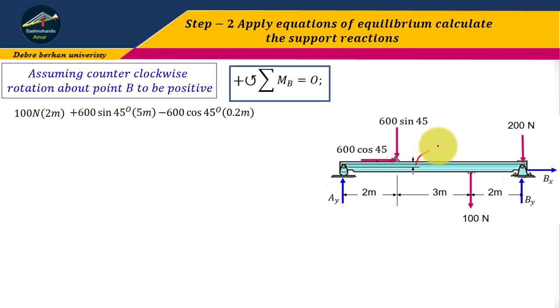This 0.2 meter distance is from the top of the beam up to the center of the beam. The moment is applied at the center of the beam at the pin support. So this perpendicular distance is 0.2 meters vertical distance.